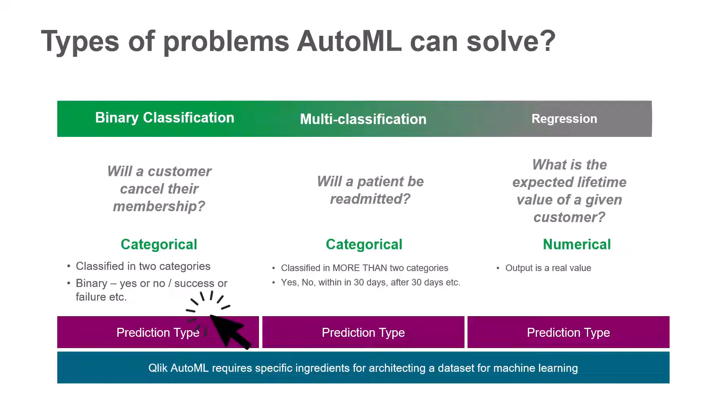Binary classification problems require a given data target to be classified in two categories. If the prediction type is binary, it will contain information such as yes or no, or success or failure, etc. For example: will a customer cancel their membership?